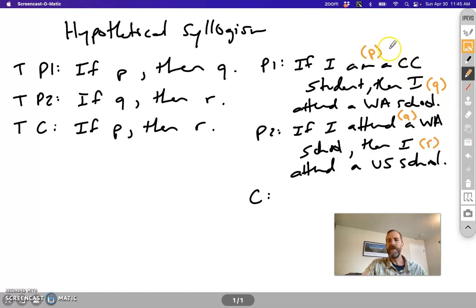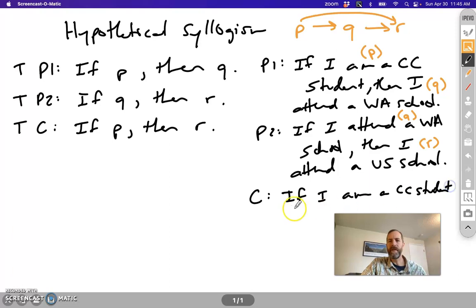So P implies Q and Q implies R. So I'm going to make my conclusion P implying R. So I go up here to my original P term. I say if I am a Clark College student, then, and I capture my R term, I attend a U.S. school.